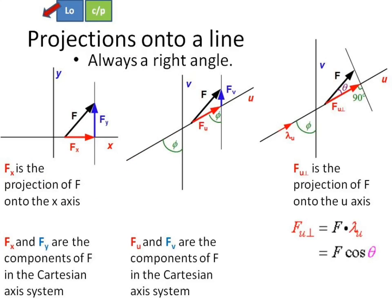Projections are always a right angle. I don't care whether your axes are orthogonal or not. Here, Fx is the projection of F onto the x-axis. Fx and Fy are the components. They are both. Here, I have Fx, Fu, and Fv are the components of F, not in the Cartesian axis system, in the uv axis system. But here, you see Fu perpendicular is the projection onto the x-axis. So this is a right angle. This one's not. We do note as a simplistic part here that this projection is the dot product, or just F cosine theta. It depends on which bits of information you're going to be given, how you're going to deal with these things.